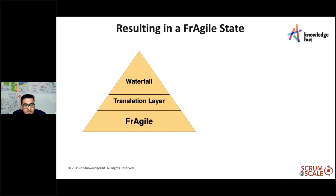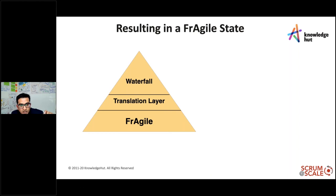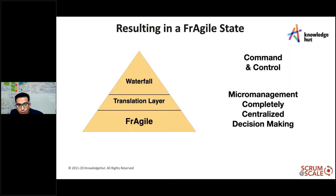Traditional management hierarchy creates project teams. Most scaling frameworks are used to provide scaffolding for the legacy organization until it can evolve. For a period of time you need this transition layer — it provides insulation — but it must ultimately be removed to achieve high performance. You can't stay with it forever; it needs to be moved across.